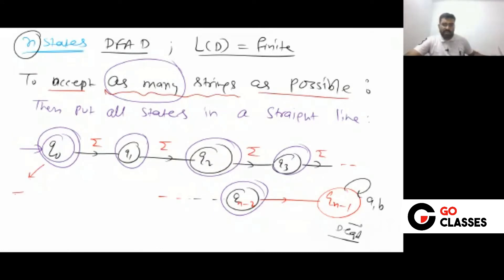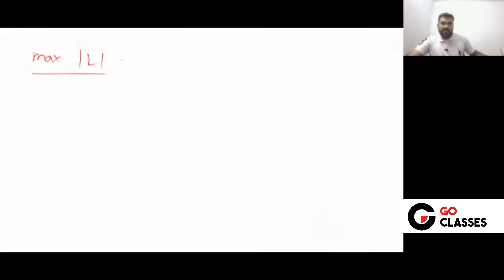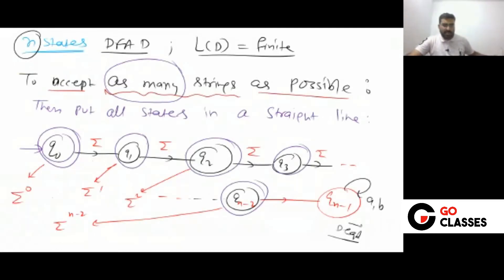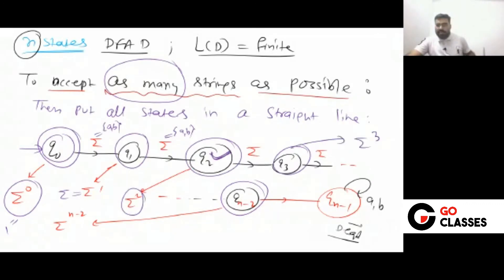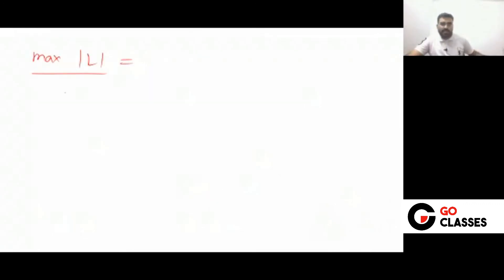So the maximum cardinality of the language is: sigma^0 + sigma^1 + sigma^2 + ... + sigma^(n-2). This is a geometric progression with (n-1) terms.